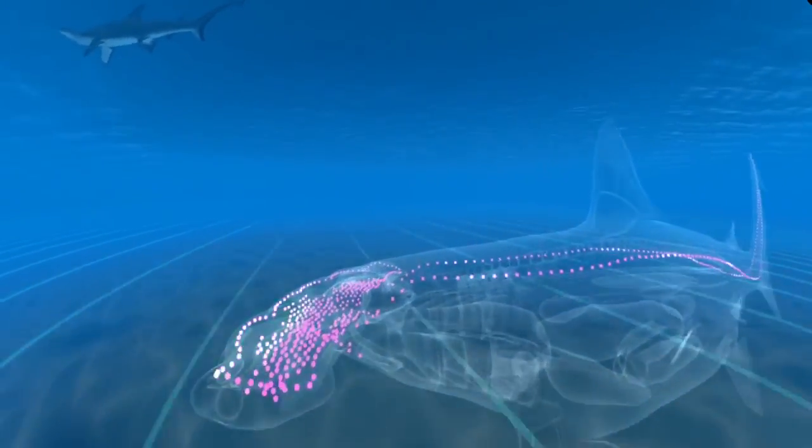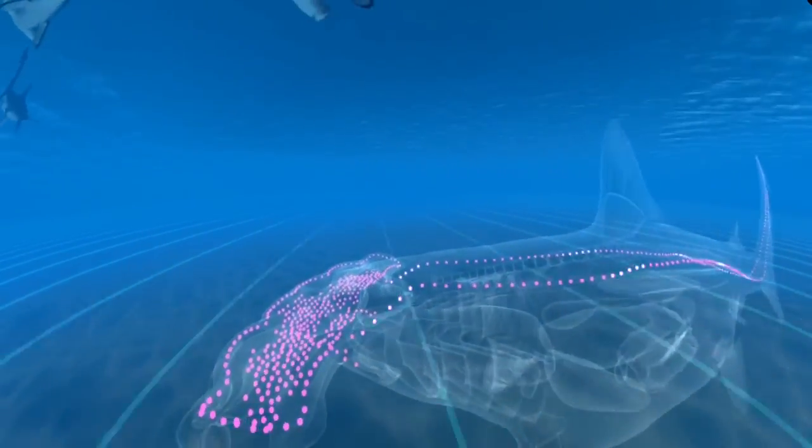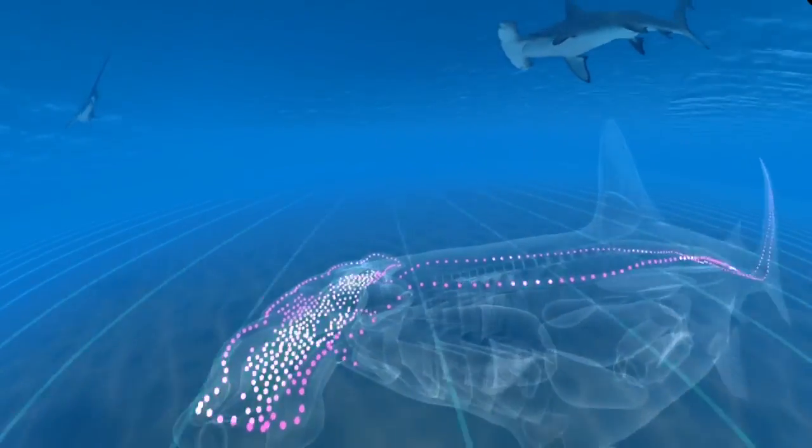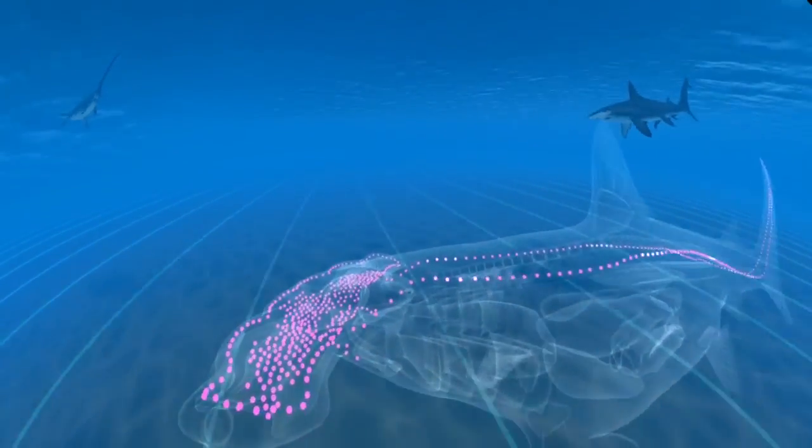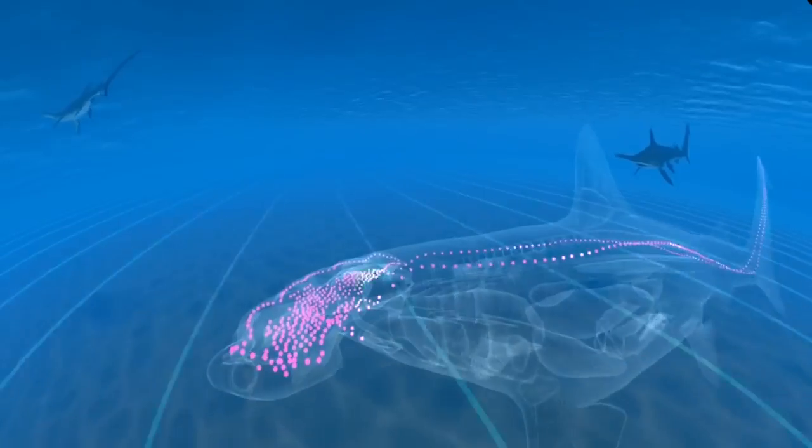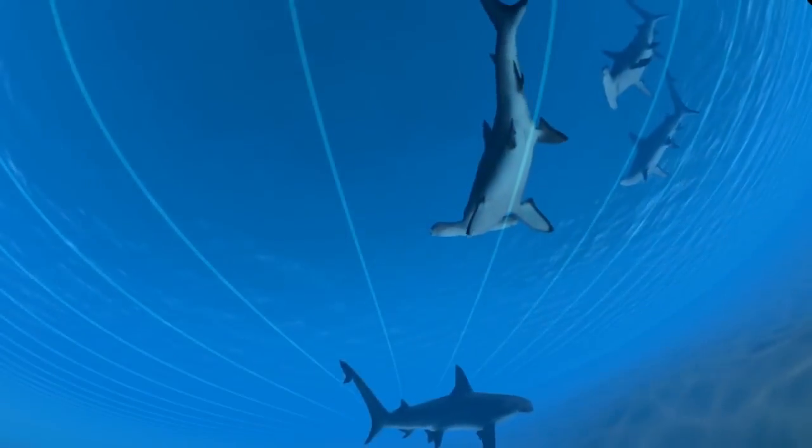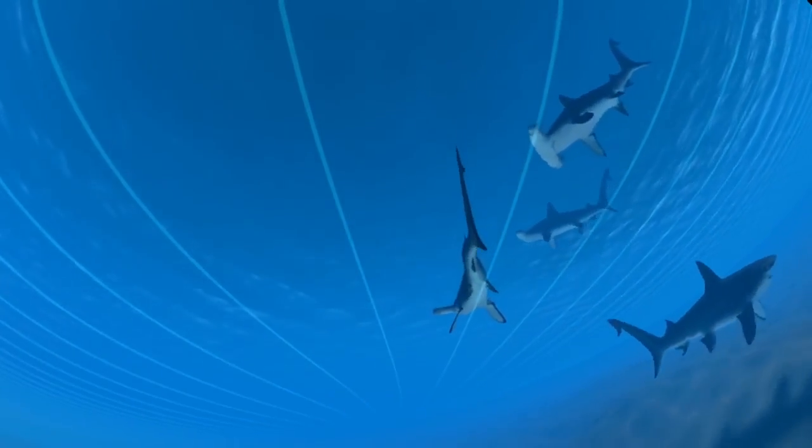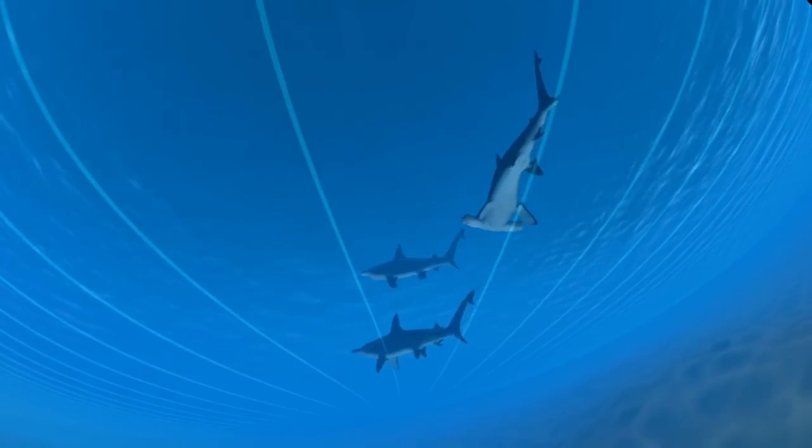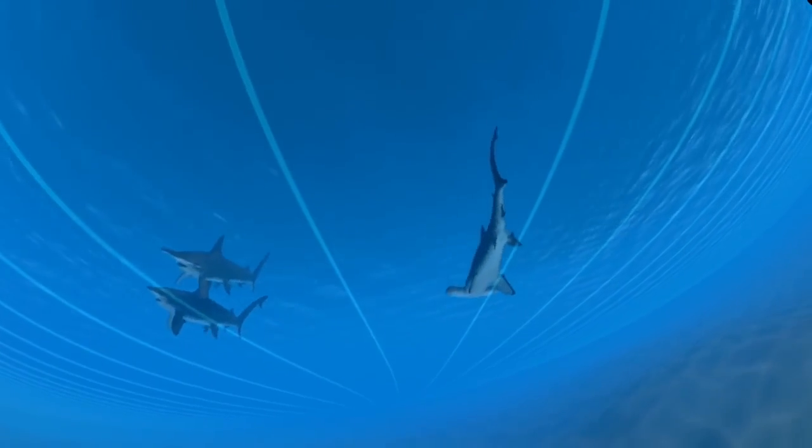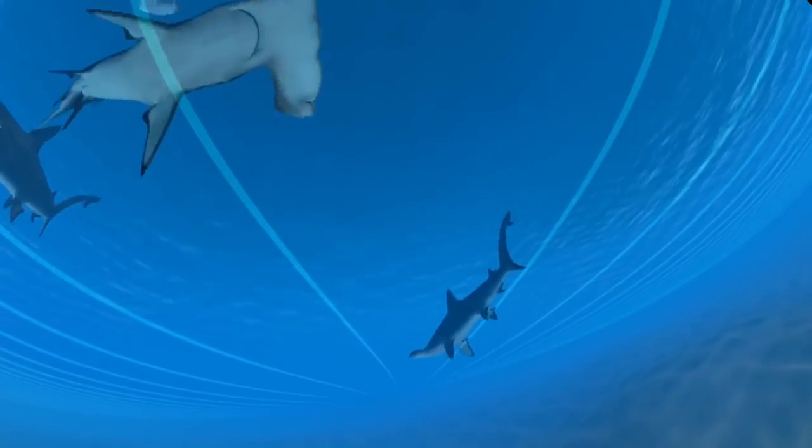Hammerhead sharks have special gel-filled organs called the ampullae of Lorenzini, which detect electric fields, both natural fields and those created from swimming across magnetic fields. Sensitivity to magnetic fields helps sharks and other fish swim in straight lines across the open ocean.